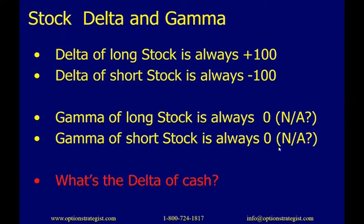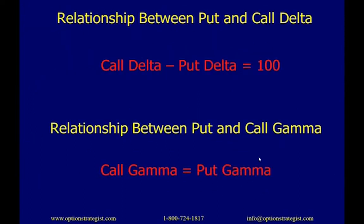What's the delta of cash? The answer is not 100 — it's essentially zero or not applicable. The example I use: suppose you have $1,000 in the bank and IBM goes up a dollar. How much money will you have in the bank? Still $1,000. A change in stock price doesn't affect cash.